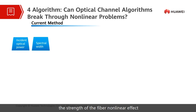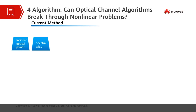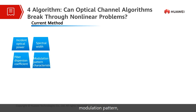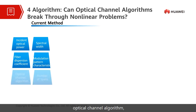The strength of the fiber non-linear effect is related to: the incident optical power, spectrum width of the optical signal, modulation pattern, fiber dispersion coefficient, optical channel algorithm, and number of spans.